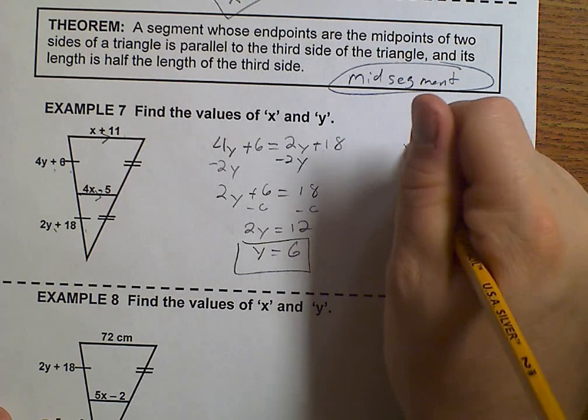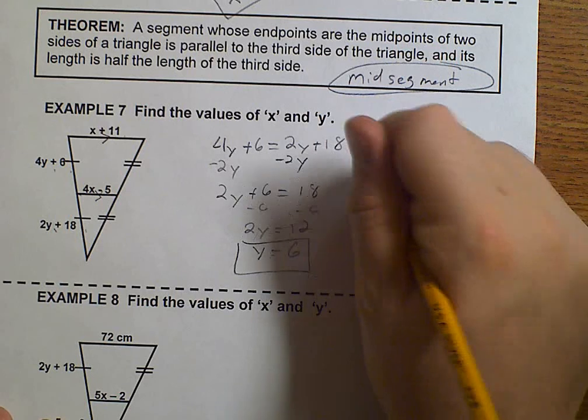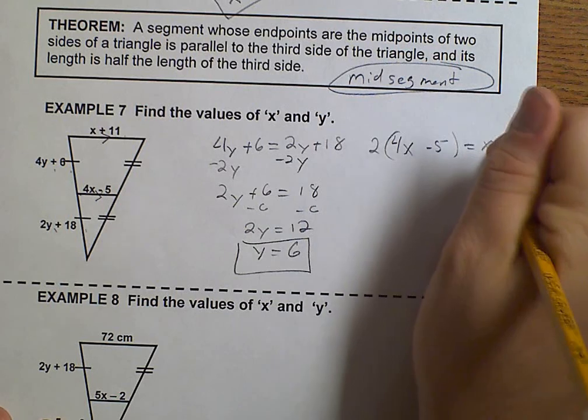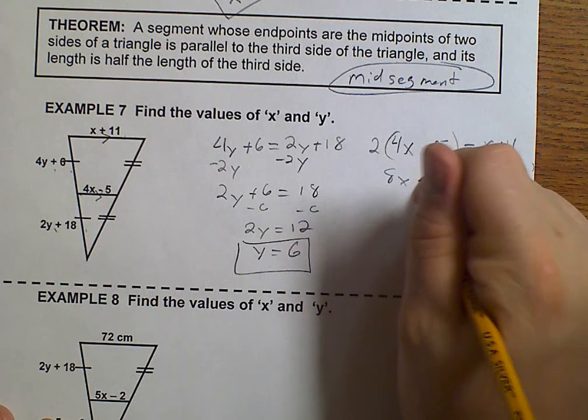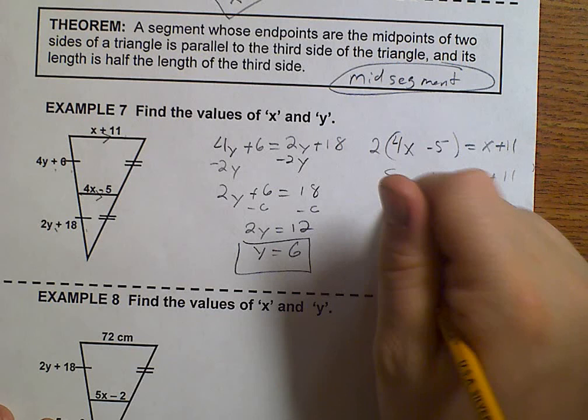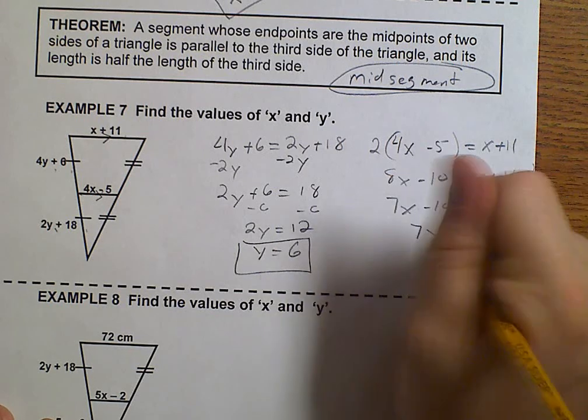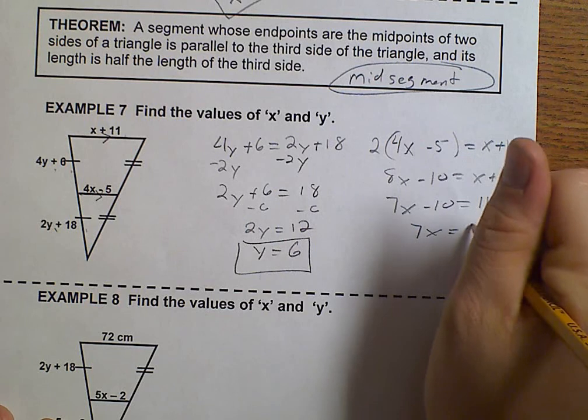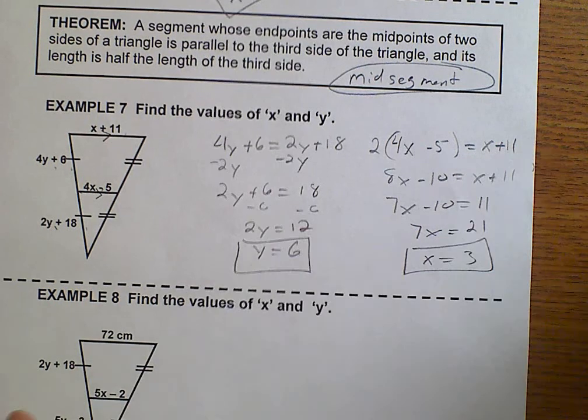And 4X minus 5 times 2 must be X plus 11. So 8X minus 10 equals X plus 11. 7X minus 10 is 11. 7X is 21. Therefore, X equals 3.